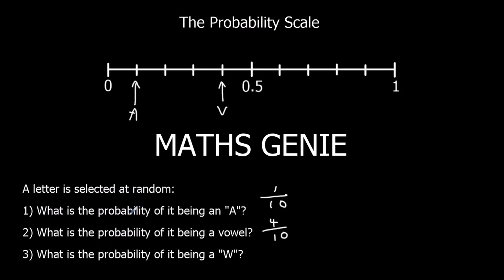What's the probability of getting a W? Well, there's no W's there, so it's 0. There's no chance, 0 out of 10. So the probability of getting a W is there.